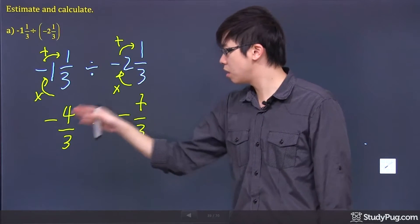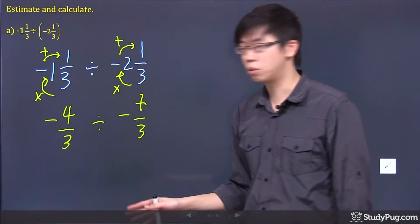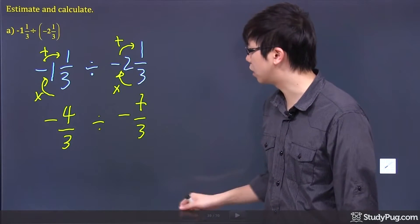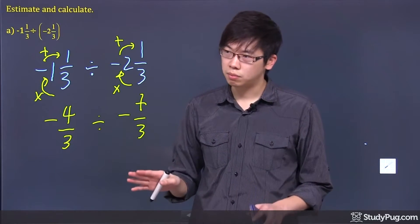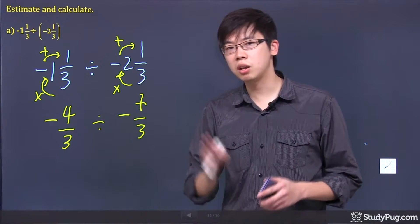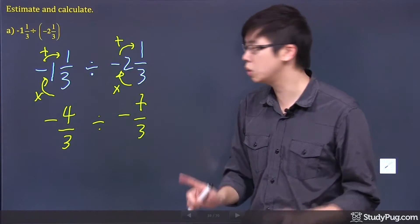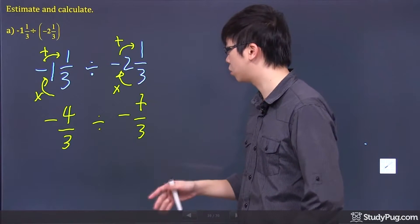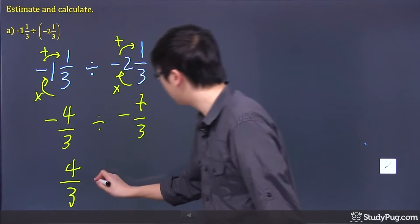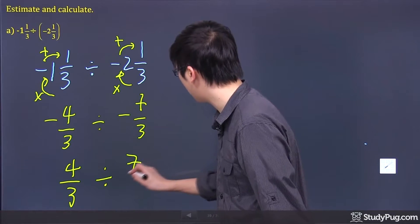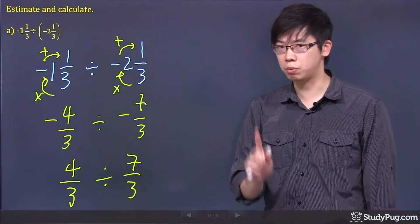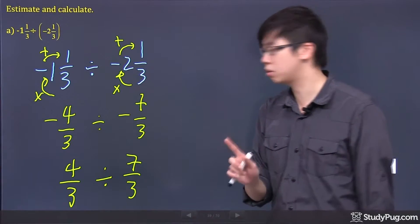So we have negative 4 over 3 divided by negative 7 over 3. There's two things that we need to clear before we do anything. First of all, negative and negative number. If you're dividing or multiplying, it doesn't matter which one you're going to do, it becomes positive. So you don't have to worry about the negative sign anymore.